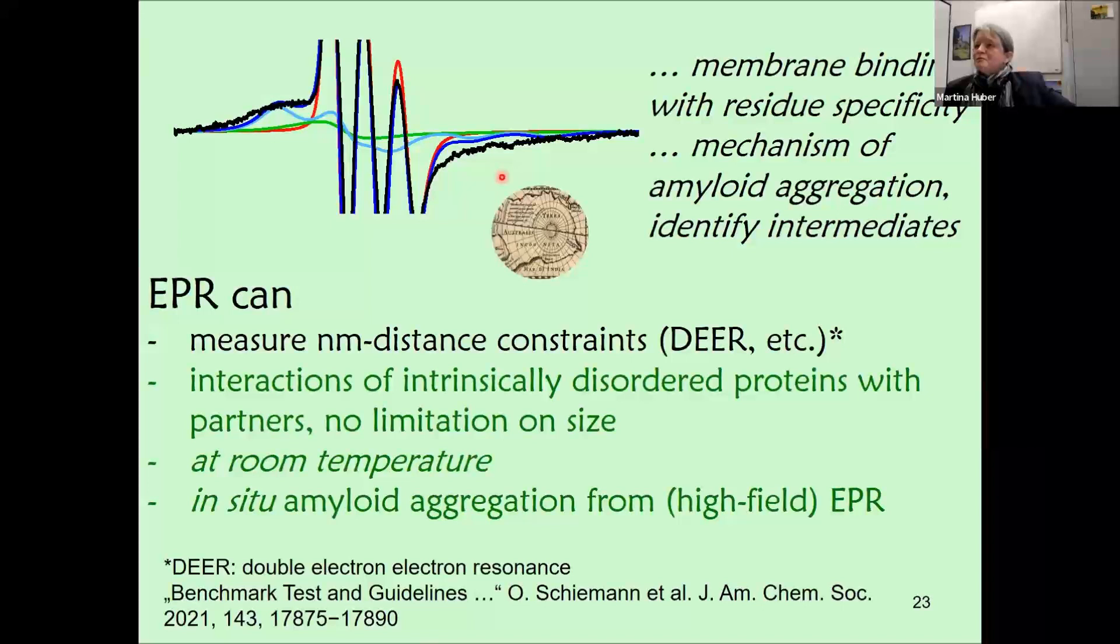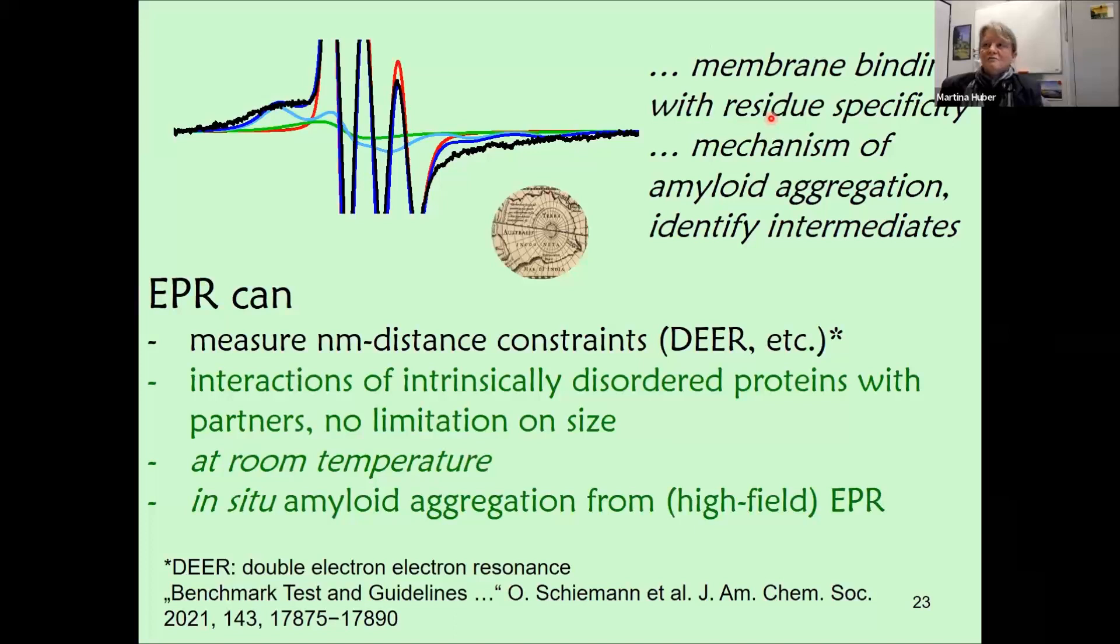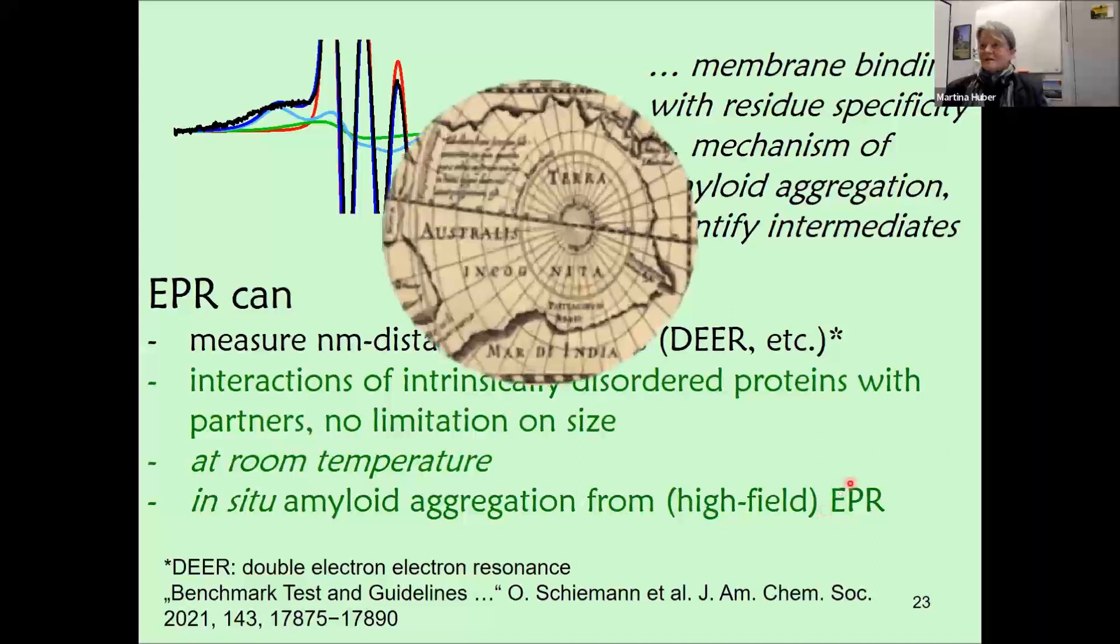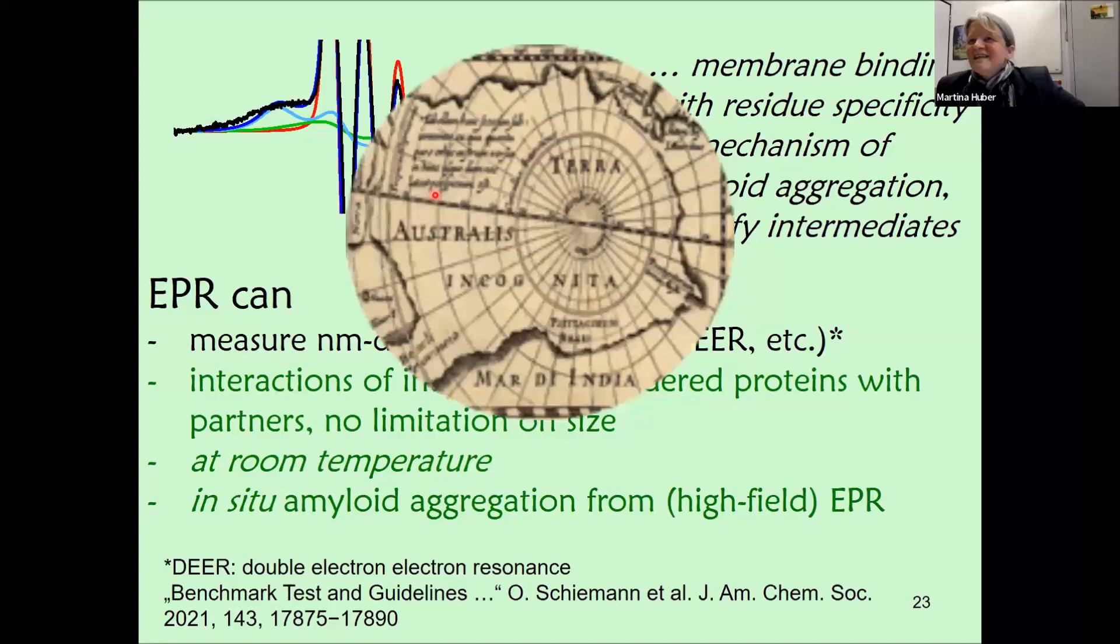This brings me to the end. I've shown you membrane binding and how we can determine membrane binding with residue specificity, and that we have a tool to get more information on the intermediates of aggregation. EPR can measure very powerful nanometer distance constraints. I haven't talked much about them, but what I want to bring across is that we can really get the interactions of intrinsically disordered proteins where we're not limited to any size of the partners. Any one of the partners I've been mentioning can in principle be targeted. This is done at room temperature and actually in situ, so while things happen. With this, we think we're well equipped to get into this terra incognita of intrinsically disordered proteins.